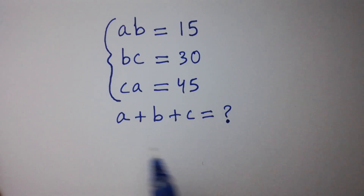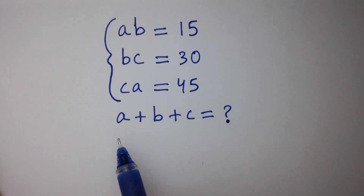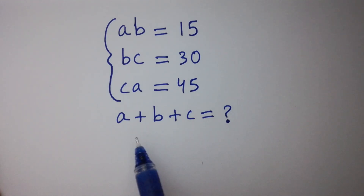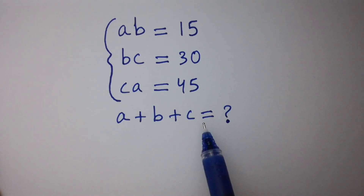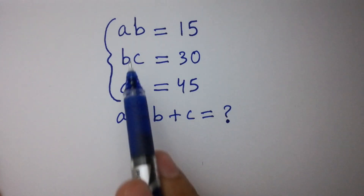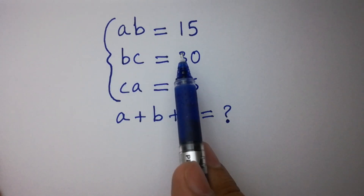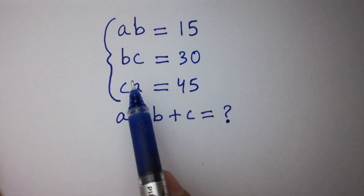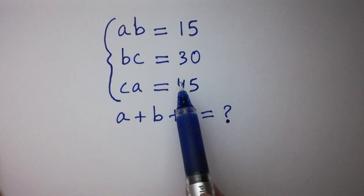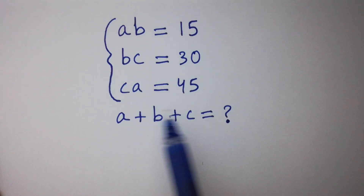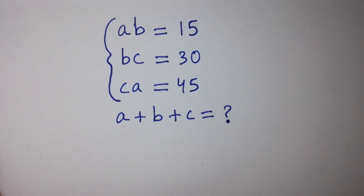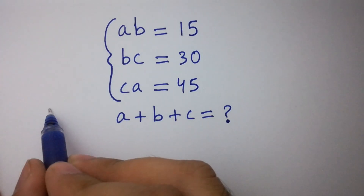Hello friends. Find the value of a plus b plus c if ab equals 15, bc equals 30, and ca equals 45. Let's have a solution.